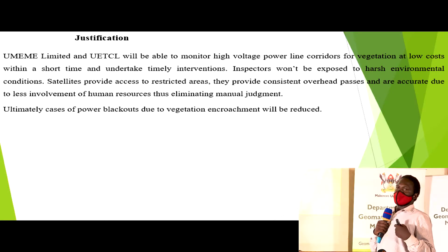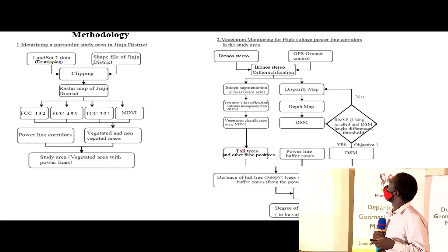If my research is implemented, UETCL will be able to monitor these high voltage lines at lower costs. Satellite images have consistent passes and there is no human judgment involved. Ultimately, cases of power blackout due to vegetation encroachment will be reduced.